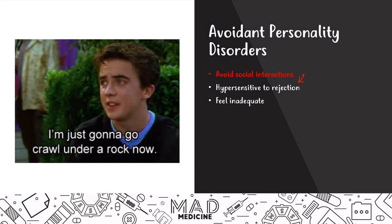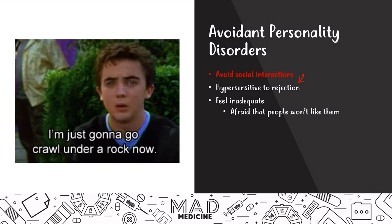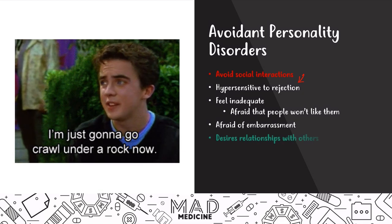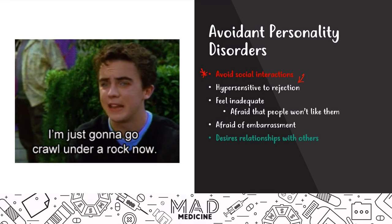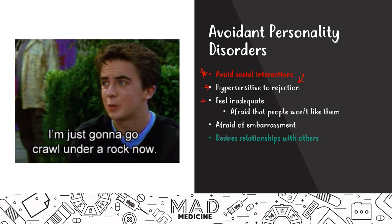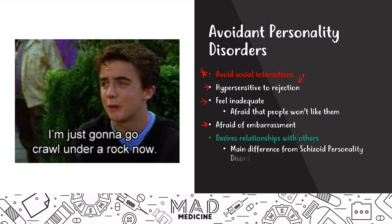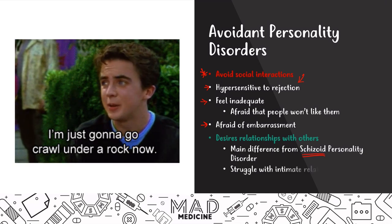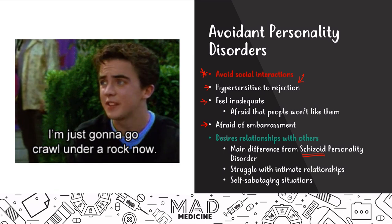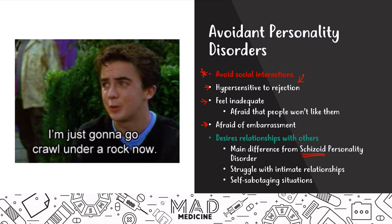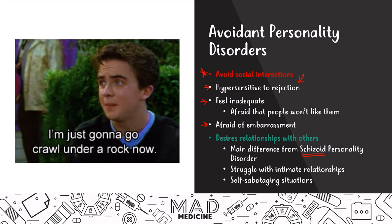They have a fear of being inadequate, and they're afraid that people won't like them in general. They're afraid of embarrassment. They desire relationships with others, but they cannot create those relationships because they avoid social interaction and they're afraid of rejection and embarrassment — that's the key difference from schizoid, where those patients don't want relationships at all. They also struggle with intimate relationships and often have self-sabotaging situations, which ends up leading them to break the relationships they may have.